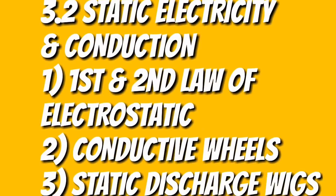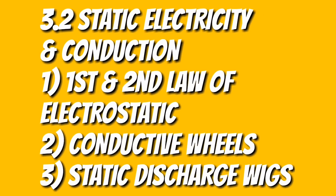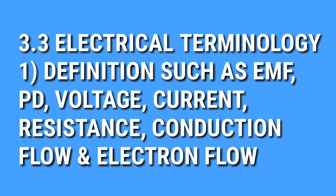Moving on to 3.2, we have static electricity and conduction. In this you need to study the first law of electrostatics as well as the second law, and about conductive wheels, static discharge wicks, their advantages and uses. Next comes 3.3, which is about electrical terminology, which includes various definitions such as EMF, potential difference, voltage, current, resistance, conductance, charge, conventional flow and electron flow.